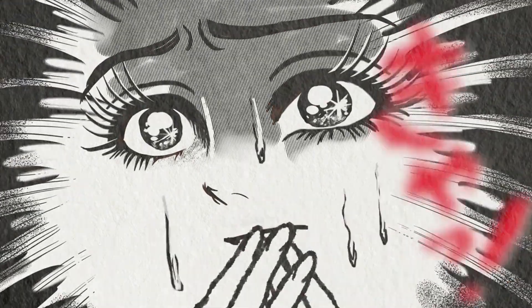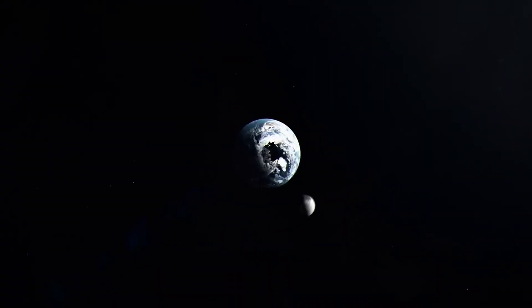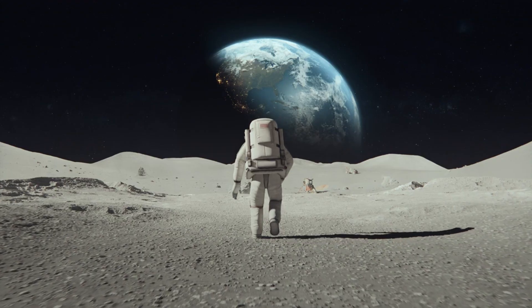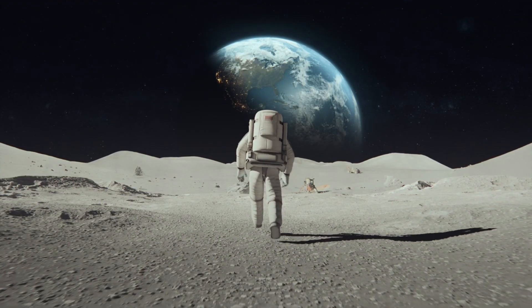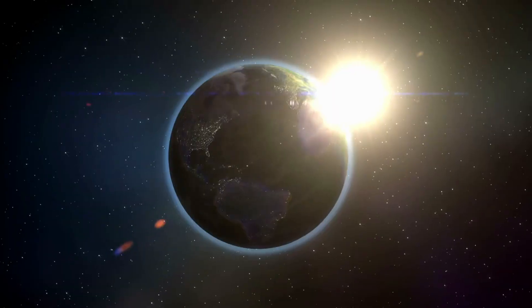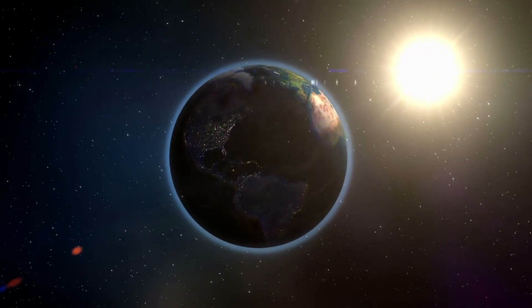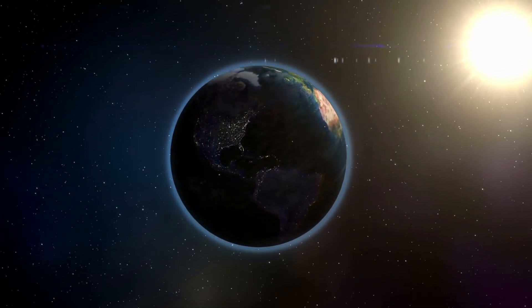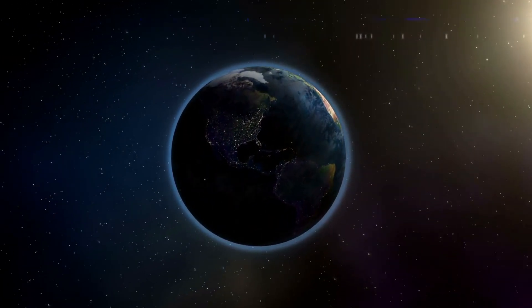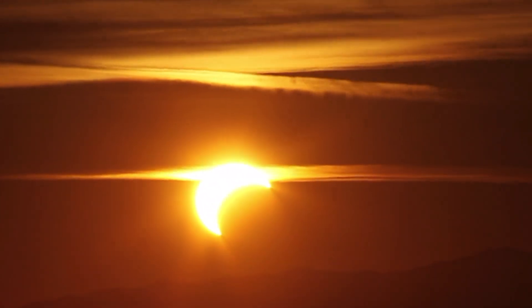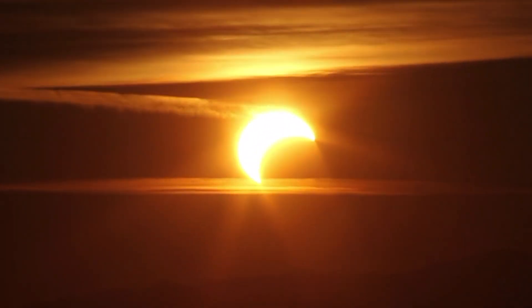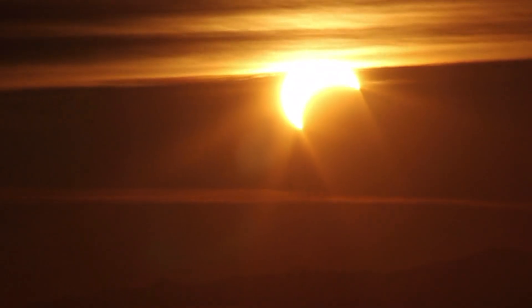And if that doesn't melt your brain, the moon is slowly leaving us. Each year, the moon drifts 1.5 inches farther away from Earth. It used to be much closer, and back then days were shorter, only about 6 hours long. Fast forward millions of years into the future, and Earth's rotation will slow so much that we'll have 47-hour days. Oh, and total solar eclipses will stop happening because the moon will be too far to perfectly cover the sun.